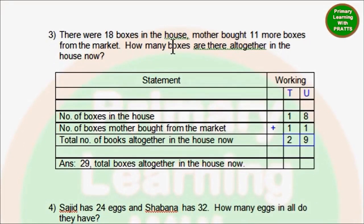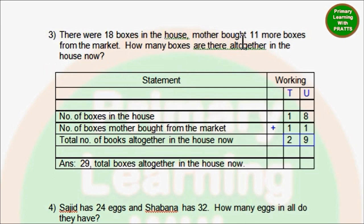The third sum: There were 18 boxes in the house. Mother bought 11 more boxes from the market. How many boxes are there altogether in the house now? Our first statement is: Number of boxes in the house — 18. Next, mother bought 11 more boxes, so the statement would be: Number of boxes mother bought from the market — 11.